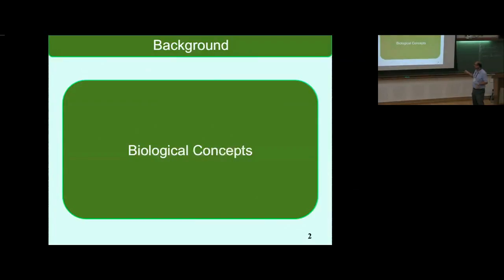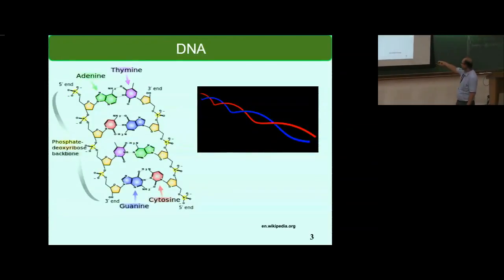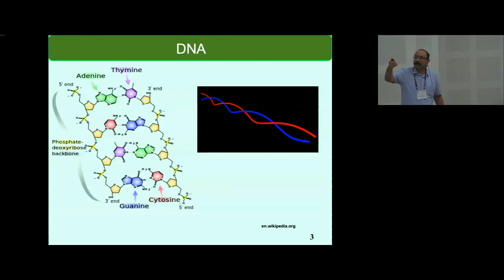To begin with some biological concepts. This is a picture of DNA. You have a sugar phosphate backbone to which these bases - adenine, thymine, guanine and cytosine - are attached. The hereditary information in DNA is contained in the sequence of these bases. The sequence contains the hereditary information.